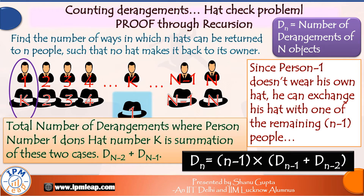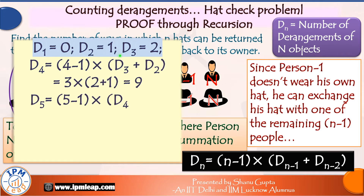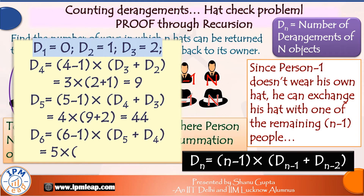We already know the values of derangements for smaller numbers of objects: D1 equals zero, D2 equals one, and D3 equals two. Using the recursion formula, D4 equals (4−1) times [D3 plus D2] equals three times three, which is nine — matching what we saw earlier. Similarly, D5 calculates to 44 and D6 calculates to 265.